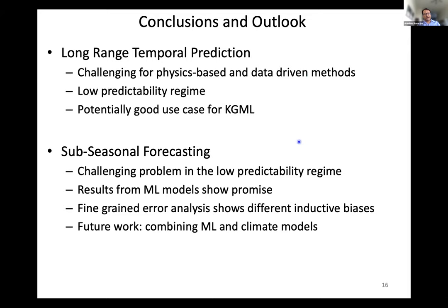To wrap up: I talked about this long-range temporal prediction problem. It's really challenging for both physics-based and data-driven methods, because the intuition of ensemble Kalman filters and data assimilation falls apart when your data has stopped and you're going out one month. It is the low predictability regime, making it a potentially very good use case for knowledge-guided machine learning (KGML), which is why we're trying to release the datasets. I talked about sub-seasonal forecasting — we did a very fine-grained data analysis and found different inductive biases for different methods. The future work will be to combine these models and see how things go.